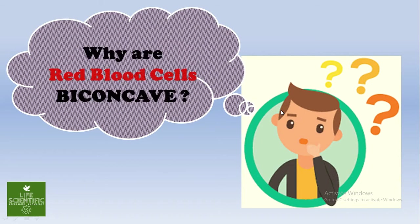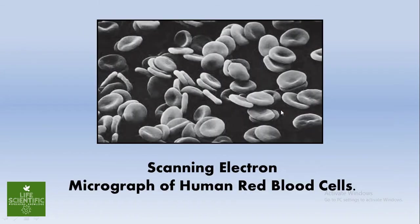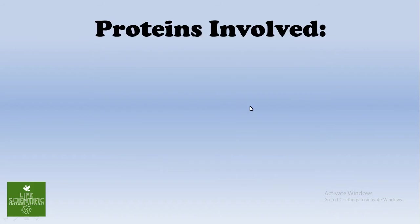As you can see in the figure, this is the electron micrograph of human RBCs. You can clearly see the RBCs are pinched inwards from both sides. Now let us look at some proteins involved in the whole process.